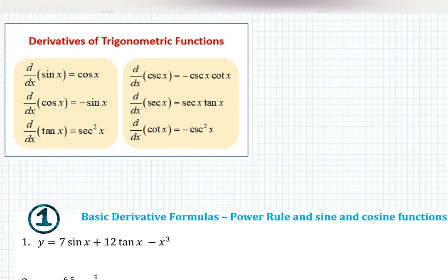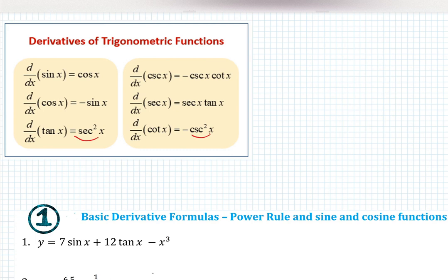Derivative of sine is cosine, derivative of cosine is minus sine, derivative of tangent is secant squared. Derivative of secant copies itself: secant times tangent. Cosecant copies itself and gives cotangent, and also there's a negative sign in front of it. Derivative of cotangent is negative cosecant squared. So secant alternates with cosecant, and tangent gives you a positive derivative while cotangent gives you a negative derivative.